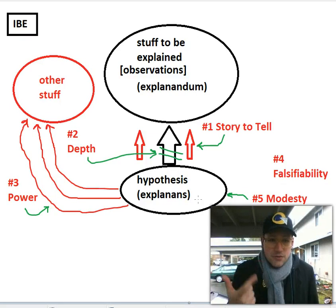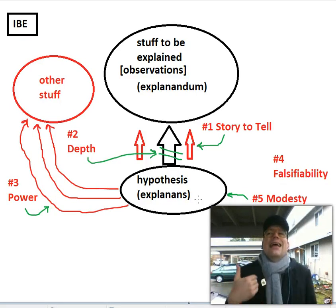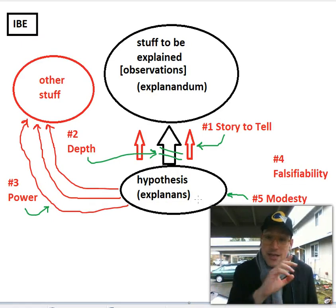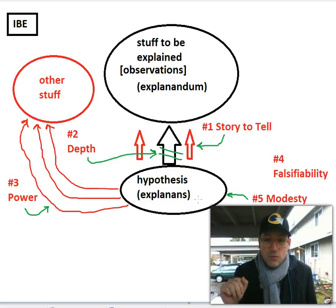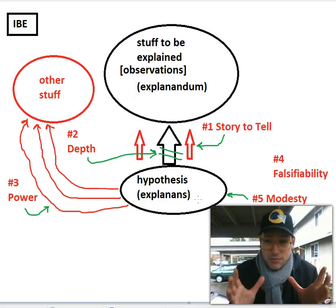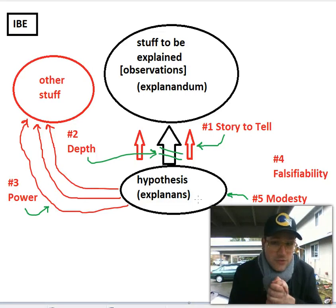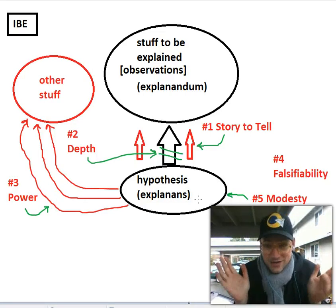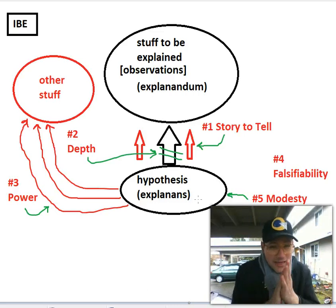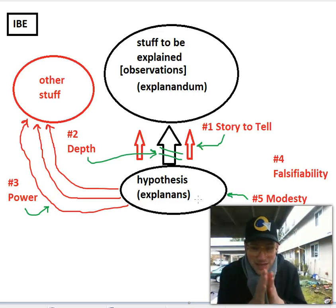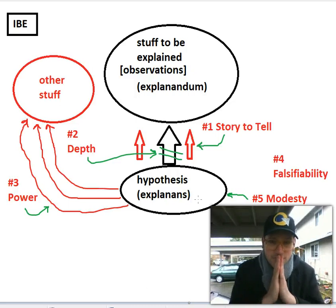The hypothesis offered was going overkill — giving extra details, more information than we need. When it comes to depth and modesty, it's a Goldilocks problem: we need enough information for it to be deep, but not too much, not more than we need to have a deep explanation. We want to catch it just right.